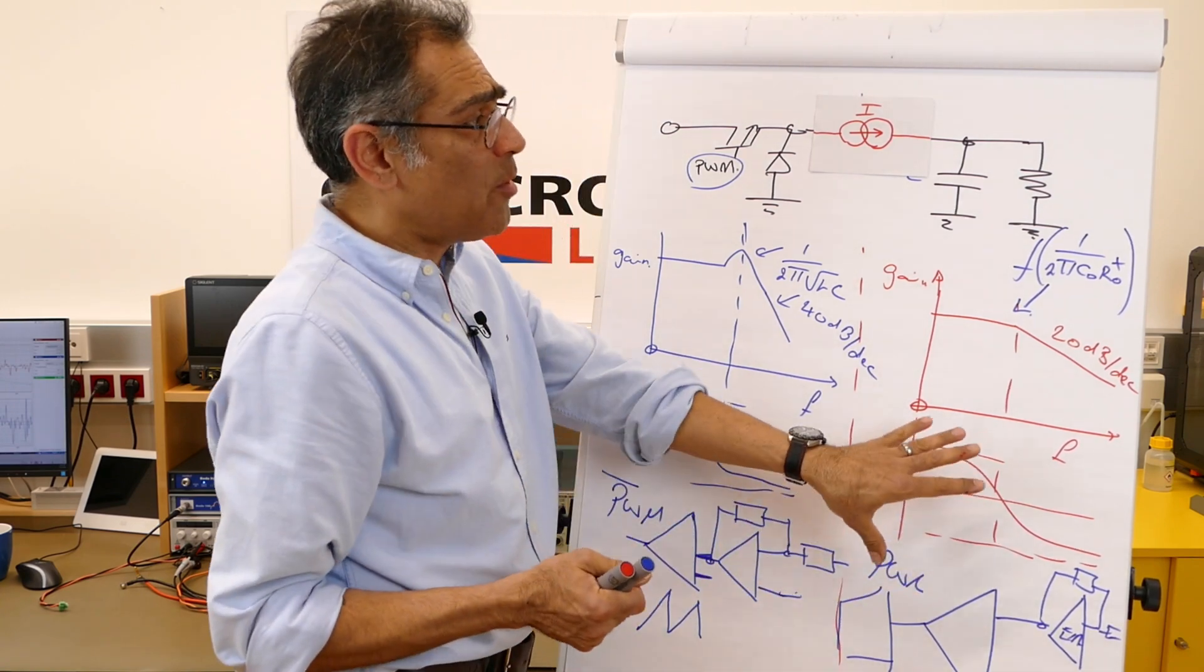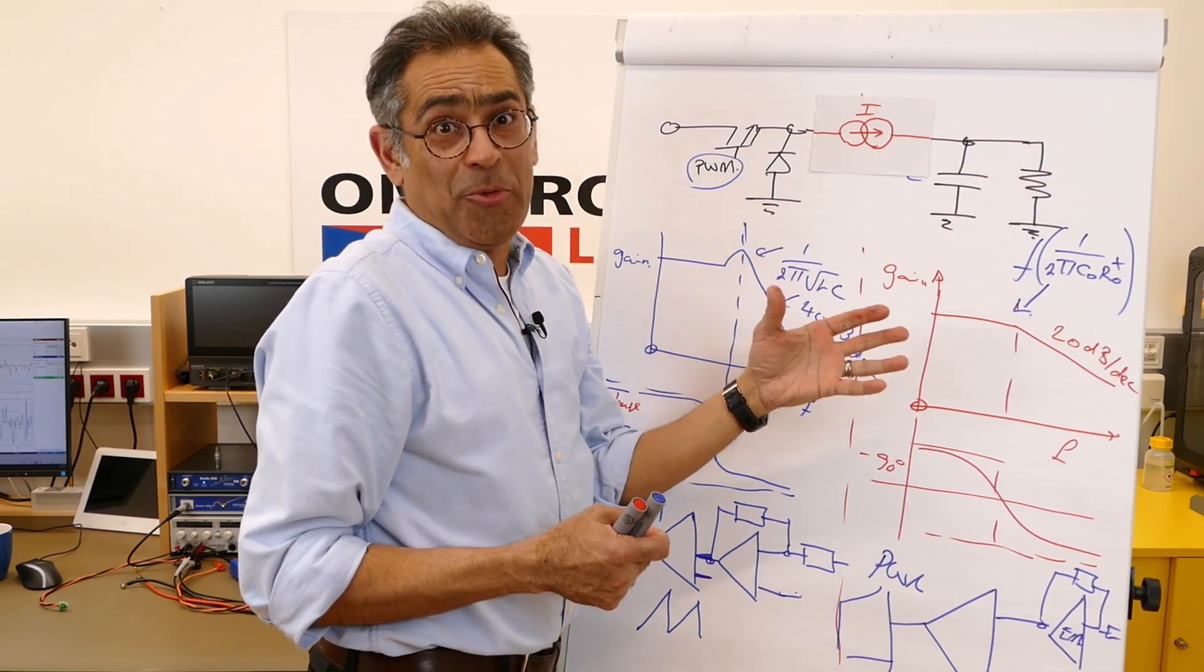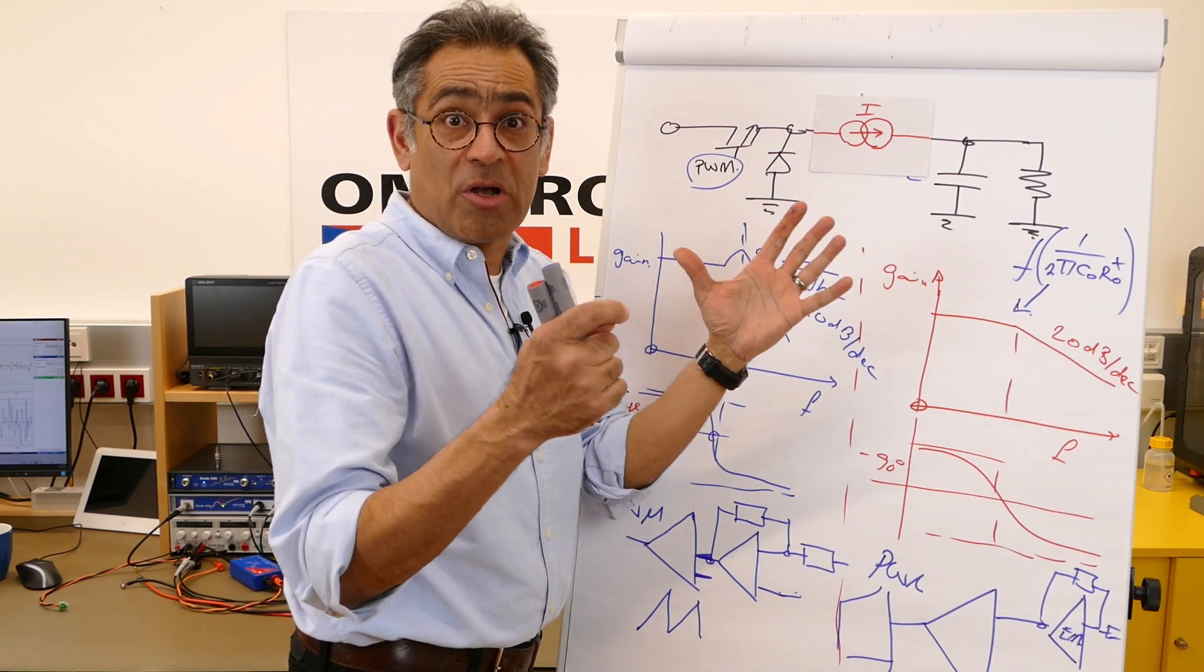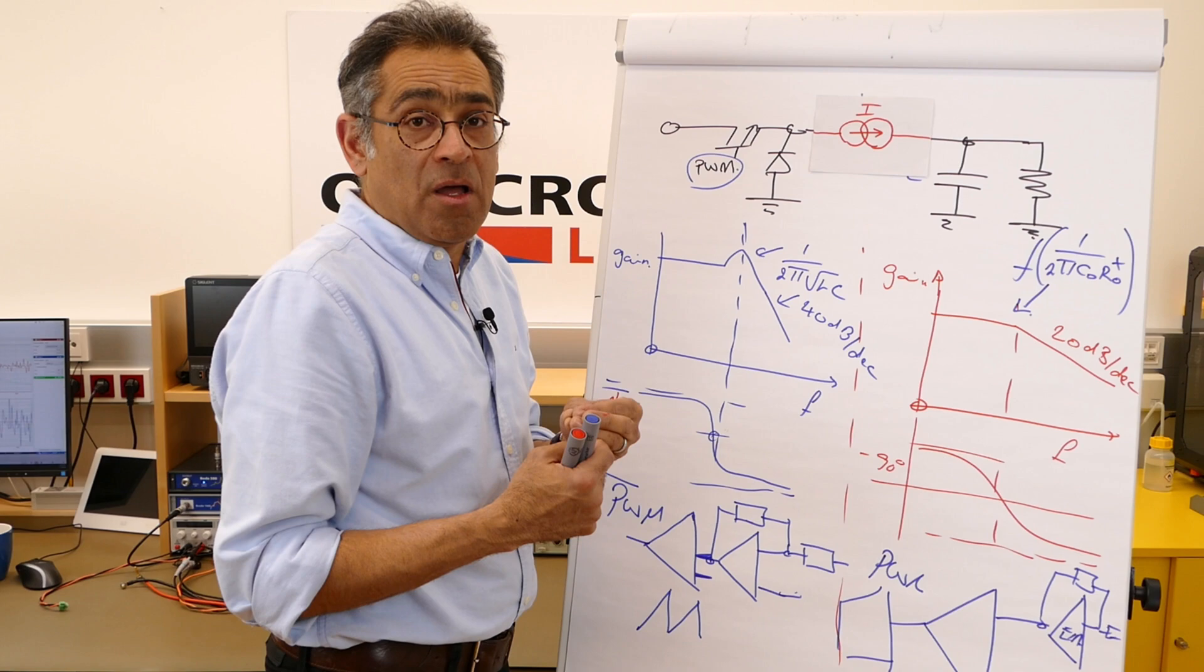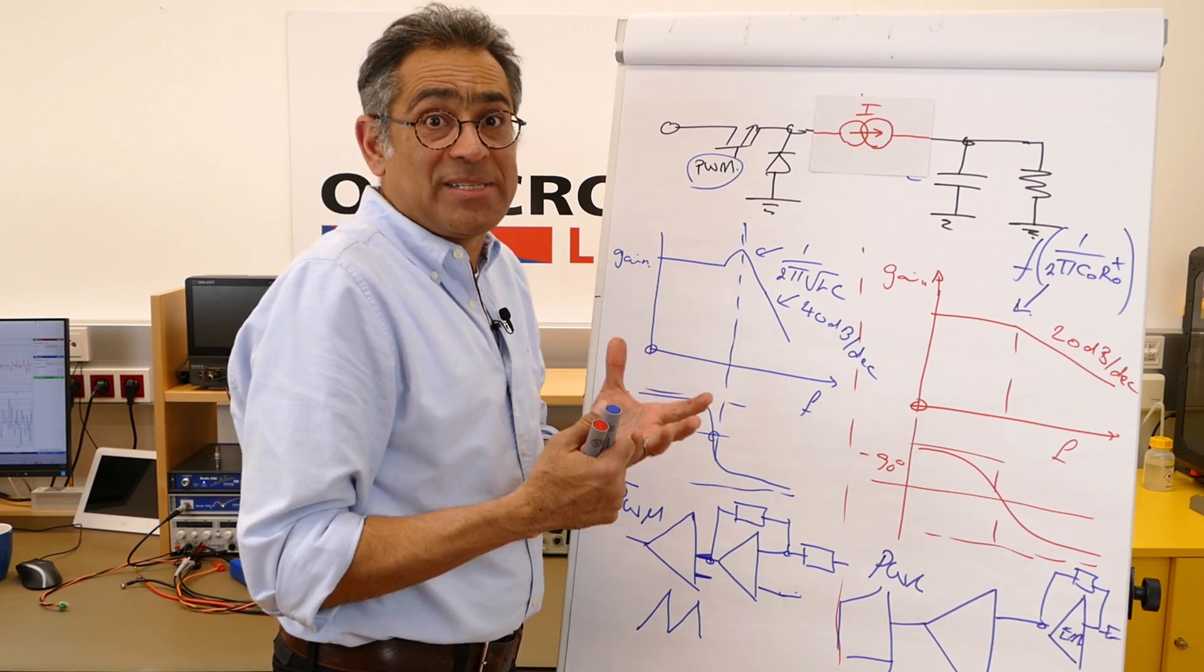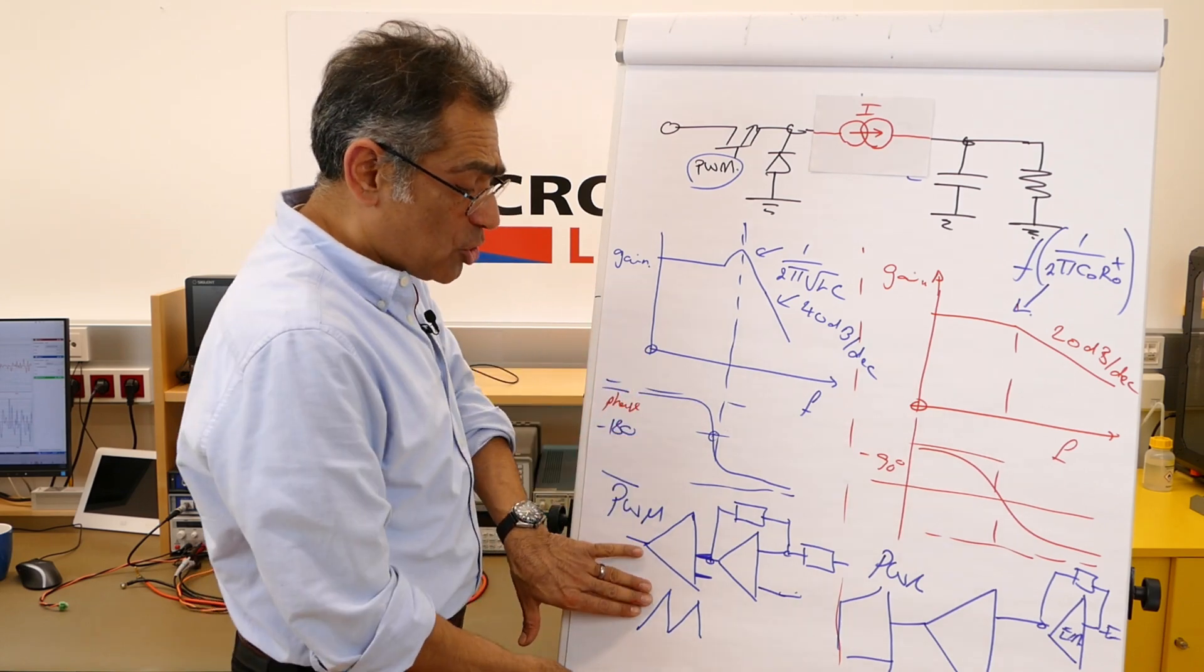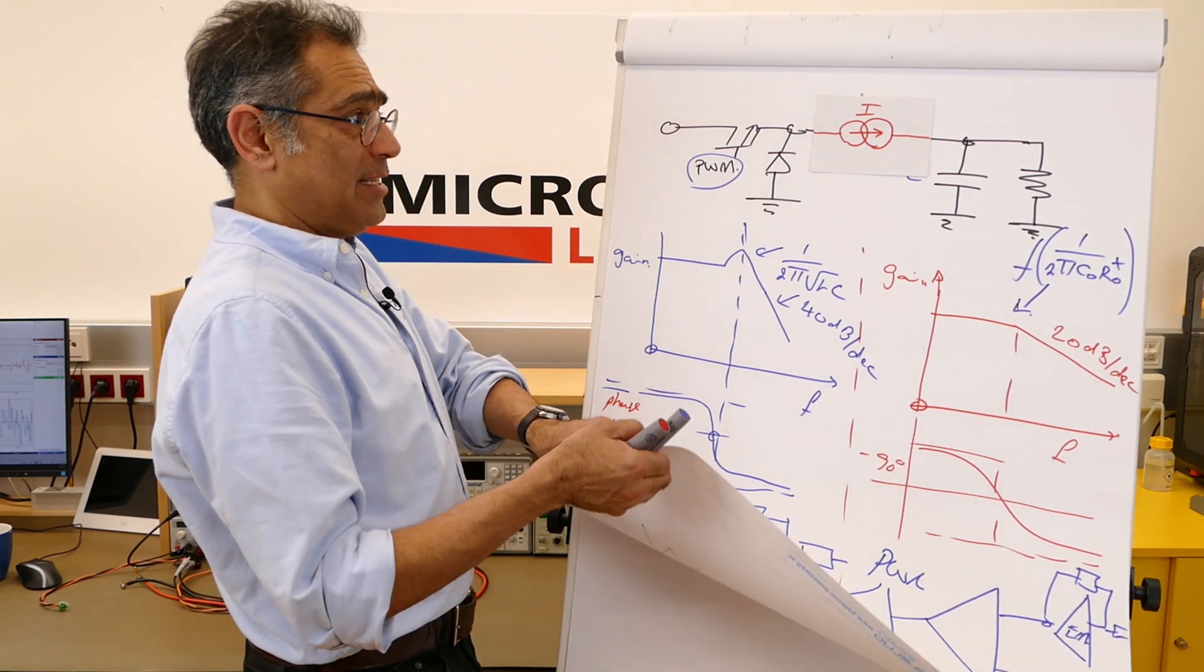Now, then we come along and say, well, we've got a problem with slope compensation, with subharmonic oscillation, and we're going to add a certain amount of compensating ramp. So let me just quickly draw that again so I can explain what happens.